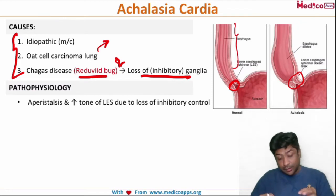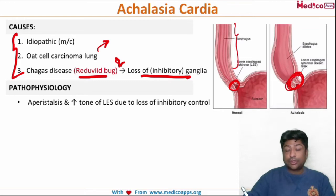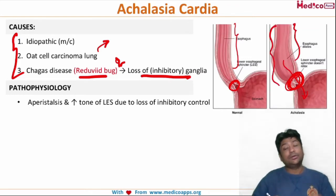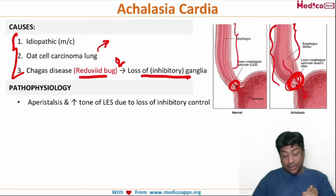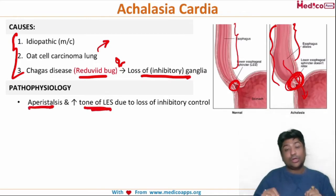There are two pathogenesis mechanisms: first, the pressure of the lower esophageal sphincter is increased, so it is not easy for food to pass from the esophagus to the stomach. Second, there is decreased peristalsis in the esophagus itself. Both of these contribute importantly to the pathogenesis — decreased peristalsis and increased lower esophageal sphincter tone.